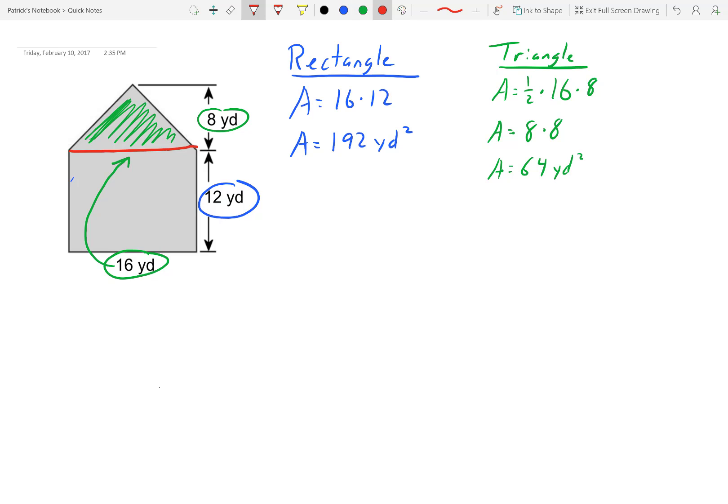Now you can probably guess what you have to do now. I'm going to take the area of the rectangle and the area of the triangle, and I'm going to add those guys together. Area equals 192 plus 64. So area equals 256 yards squared.